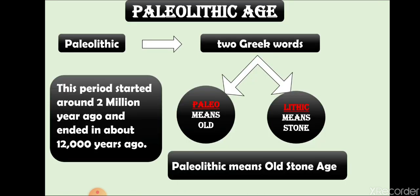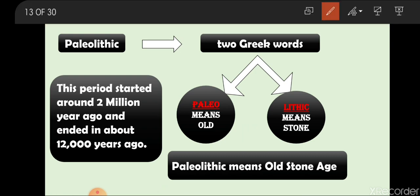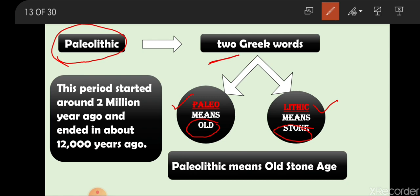We are going to learn about the Paleolithic Age first. The word Paleolithic is a Greek word made up of two Greek words: Paleo, meaning old, and Lithic, meaning stone. So in our language, we can say it is the Old Stone Age. The Paleolithic Age means Old Stone Age — the oldest period of the Stone Age, from 2 million years ago till 12,000 years ago.